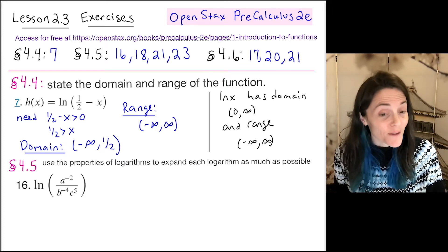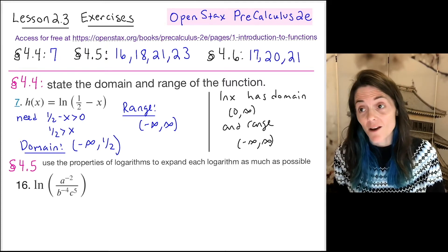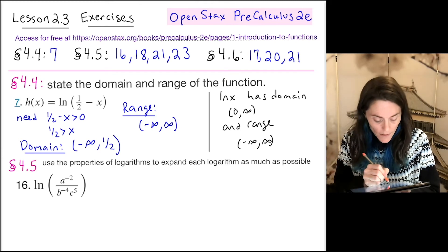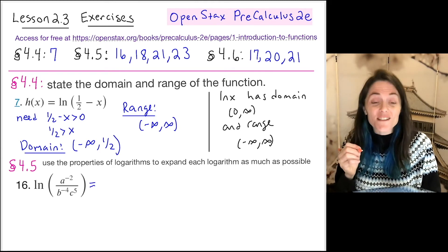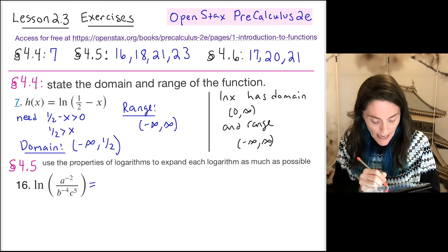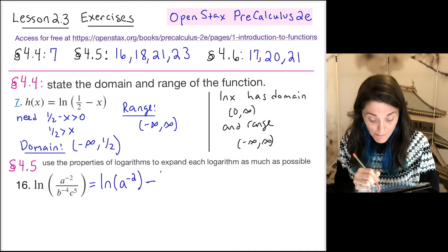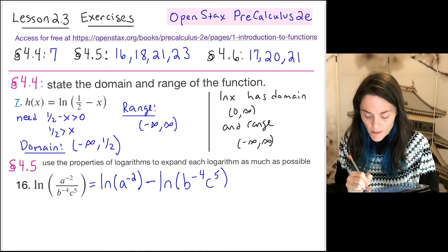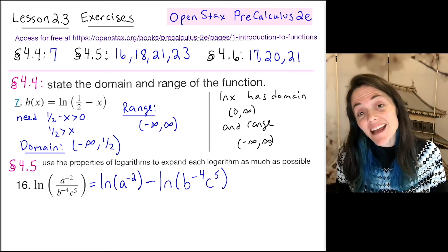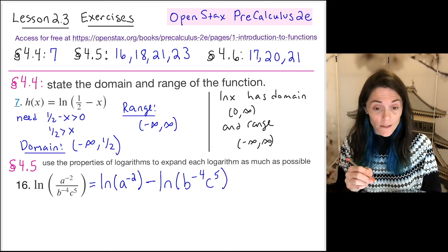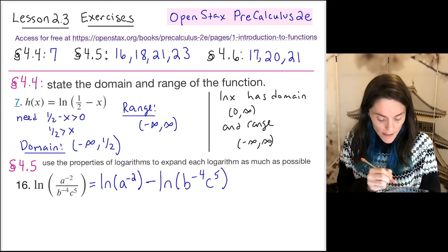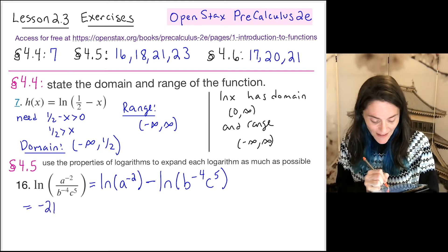Now the next one — we have a few like this. We want to use properties of logarithms to expand as much as possible. The first thing I see is a quotient on the inside, so this will become a difference. We have ln of a to the minus two, minus ln of b to the minus four times c to the fifth.